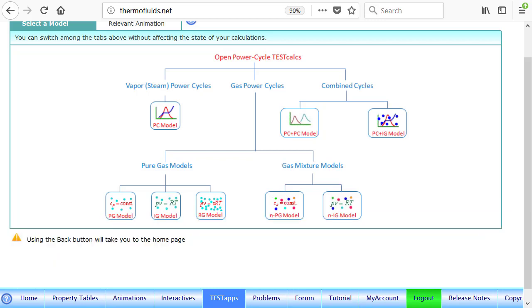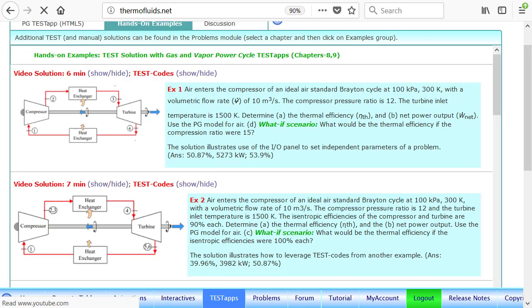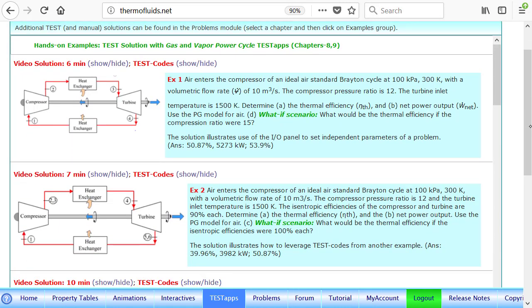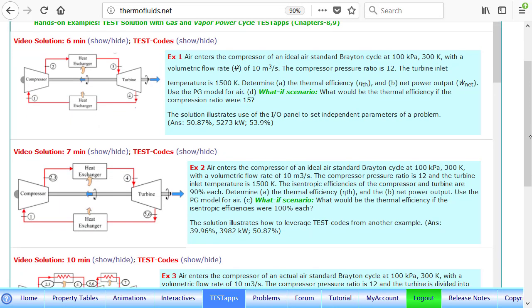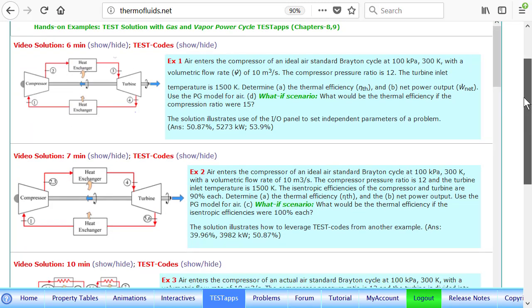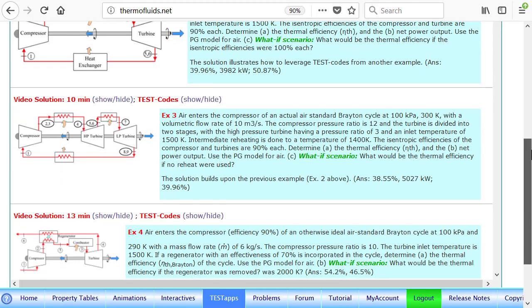It's possible that you go to the mixture model, set up a mixture, and use that as the working fluid. But we'll right now use air as the working fluid, and I'm picking PG model right now, but IG model will obviously produce more accurate answers. In this hands-on examples page, you can see several gas turbine problems solved in order of complexities. We'll pick one of those and just go over first the test code, and then we'll probably use it to regenerate the solution.